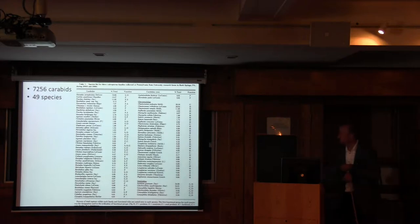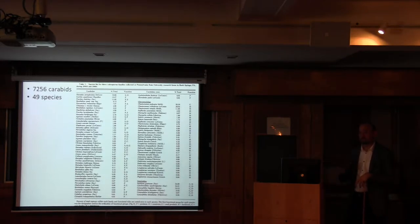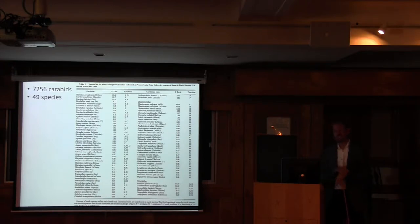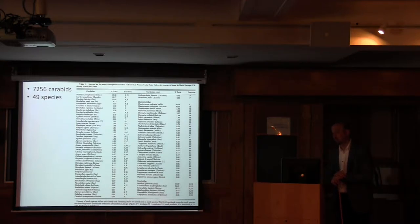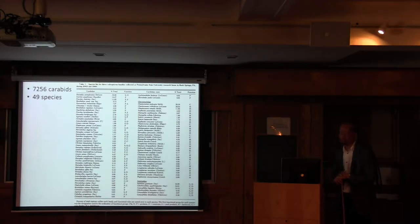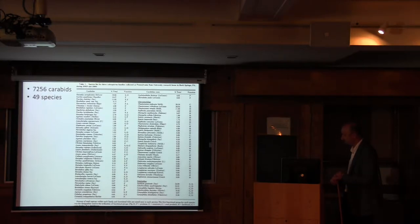This shows the taxonomic investment required for community-level work. We collected over 7,000 beetles, every single one pinned and identified to species with help from Robert Davidson at the Carnegie Museum of Natural History in Pittsburgh. We found quite a diverse range — 50 different species of just one beetle family in a cropping monoculture. There's a lot going on out there.